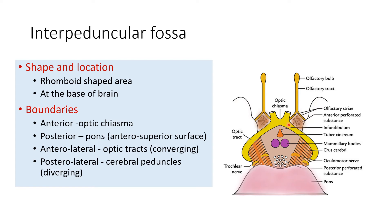You can see in this picture that posteriorly it is bounded by the anterosuperior surface of the pons. Anterolaterally it is bounded by the optic tracts, which wind around the cerebral peduncles or crus cerebri. They are converging towards this interpeduncular fossa. Posterolaterally you are seeing the two cerebral peduncles, which are diverging from the center to the periphery.